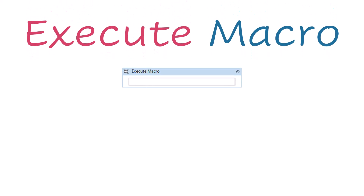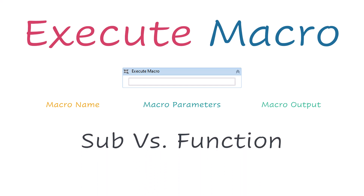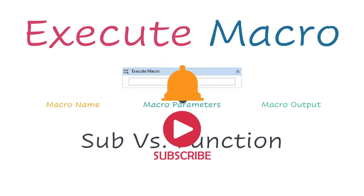Welcome back to this new video. Today I will explain how to use the Execute Macro activity in UiPath. This video will cover all topics about macros in UiPath: the properties of this activity — macro name, macro parameters, and macro output — as well as sub and function in macros, the difference between them, and when to use each one. I will show many different examples using different scenarios. If you like the video and want to see more, please subscribe to our channel.